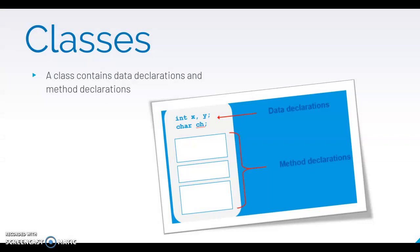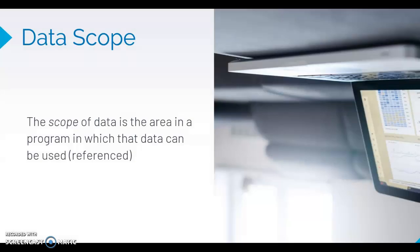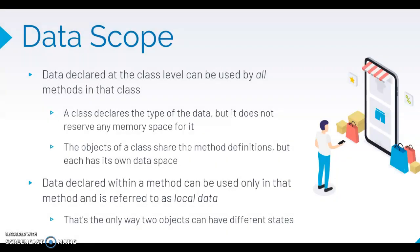Classes contain data declarations and also method declarations. Data scope is the area in a program in which the data can be used or referenced. Data declared at the class level can be used by all methods in that class. A class declares the type of the data, but it doesn't reserve any memory space for it.